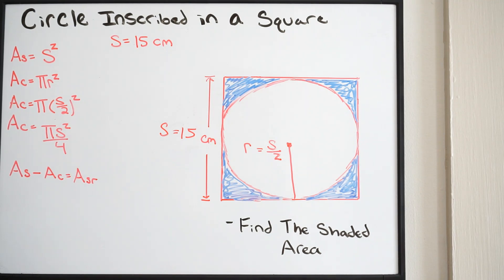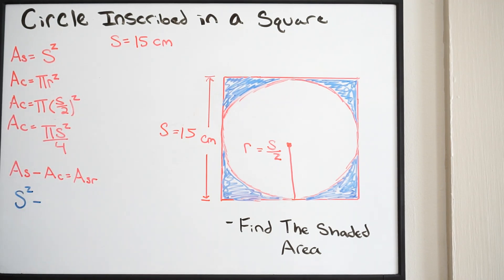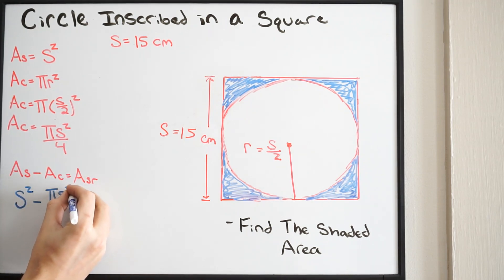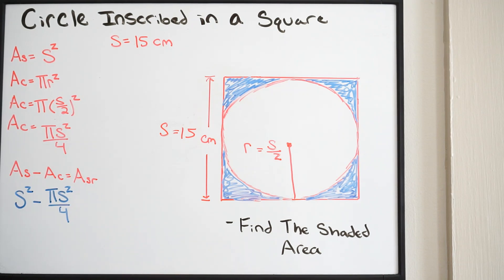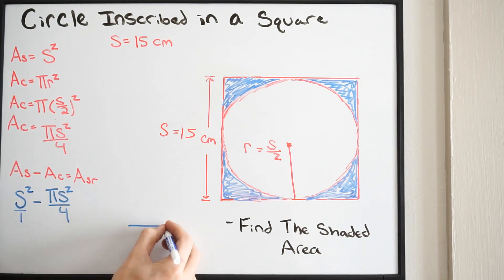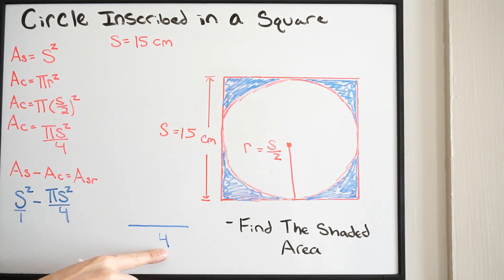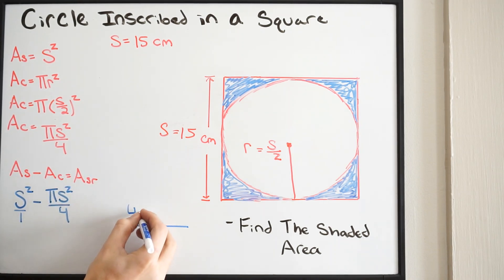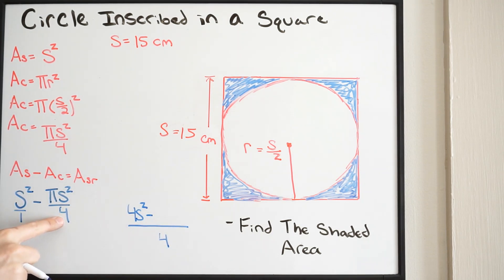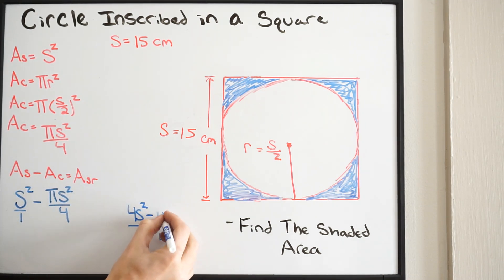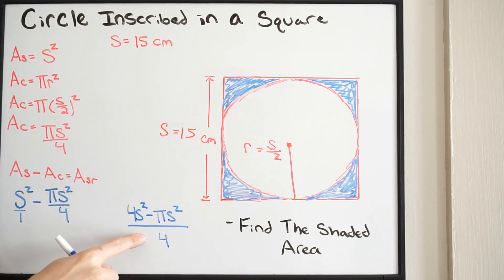So we have the area of the square, which is S squared, minus the area of the circle, which is pi S squared all over 4. We need a common denominator here — S squared is really over 1. Multiplying to get a denominator of 4, we get 4S squared over 4 minus pi S squared over 4. So the area of the shaded region is (4S squared minus pi S squared) all over 4.